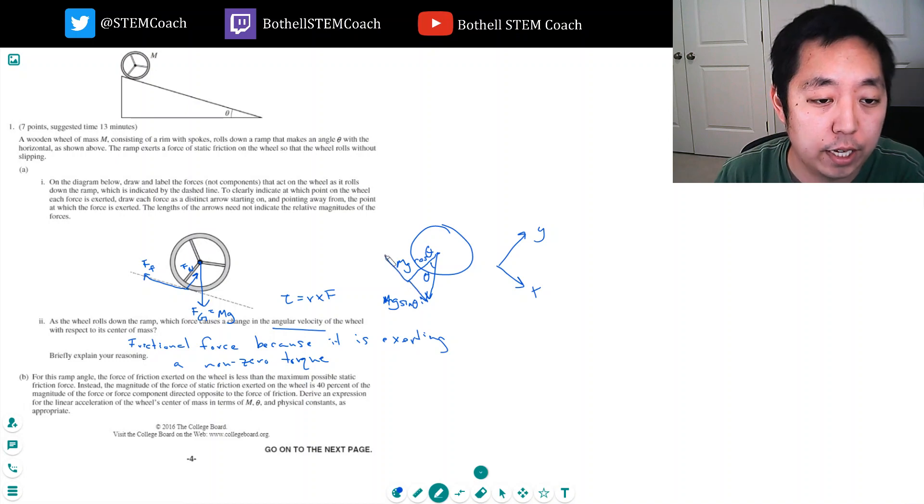And then the frictional force acts in this direction, which is equal to 0.4 times the maximum friction, and then the normal force here. Sorry, this should be Fn. Fn is equal to, yeah, that's the normal force.